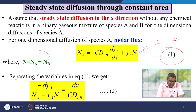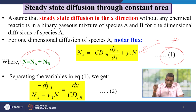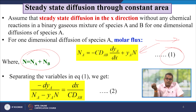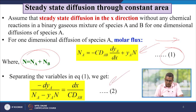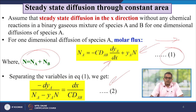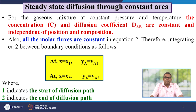Where N is equal to NA plus NB, and A and B are the species as described earlier. If we separate the variables in equation 1, we get: minus dyA over (NA minus yA·N) equals dx over (C·DAB). This we can call equation number 2.